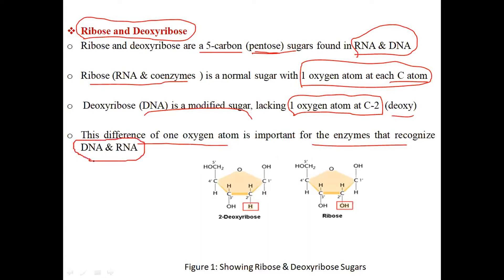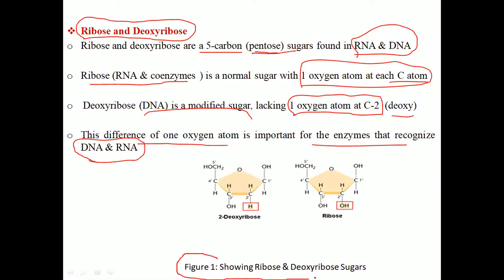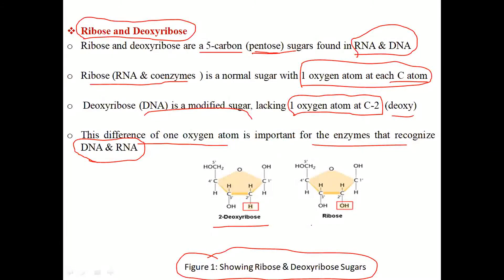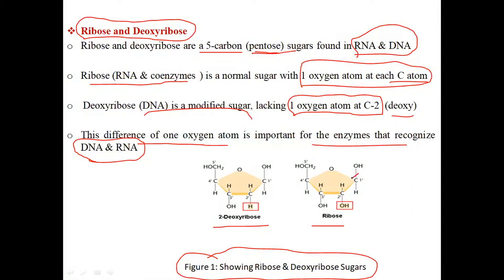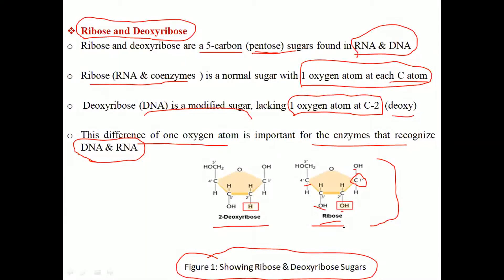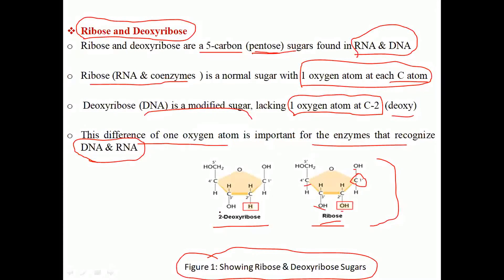Let's see Figure 1. This is deoxyribose and this is ribose. Ribose is a normal sugar — carbon one contains one oxygen, carbon two contains another oxygen, carbon three and carbon four similarly each contain one oxygen atom. So all carbons contain a normal oxygen atom, which is why ribose is a normal sugar.